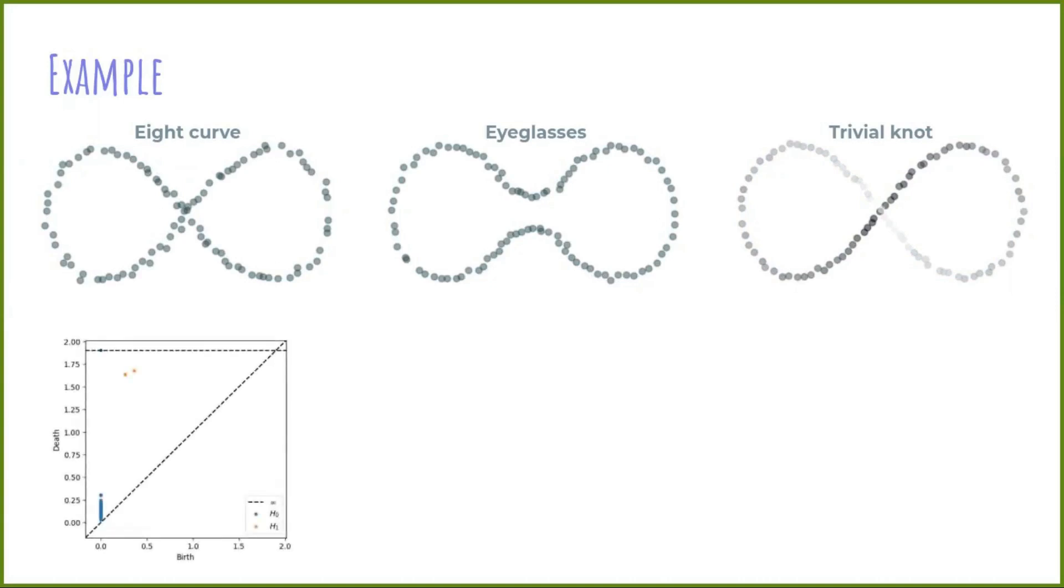In the first case, the diagram shows two salient generators of the first homology group. This captures correctly the topology of the eight space if we think of generators with a long lifetime as topological features.